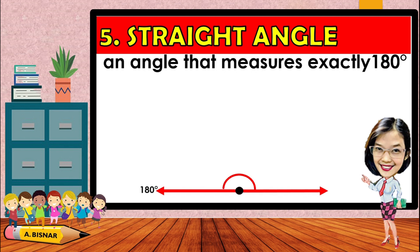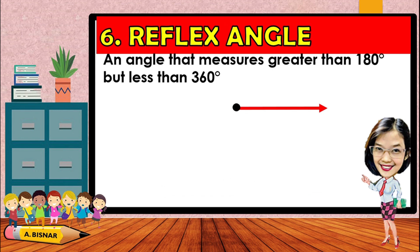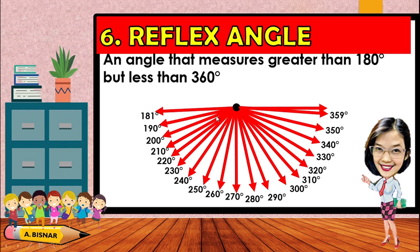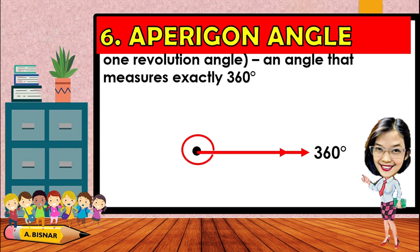The straight angle is an angle that measures exactly 180 degrees; it is called a straight angle because it forms a straight line. Next is the reflex angle — an angle that measures greater than 180 degrees but less than 360 degrees, with examples from 181 up to 359 degrees. The last one is the perigon angle, or one revolution angle, which measures exactly 360 degrees — a complete revolution.